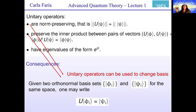Given two orthonormal basis sets {|φᵢ⟩} and {|ψᵢ⟩} for the same space, you can write |ψᵢ⟩ as U|φᵢ⟩, so you can change that basis using unitary operators.